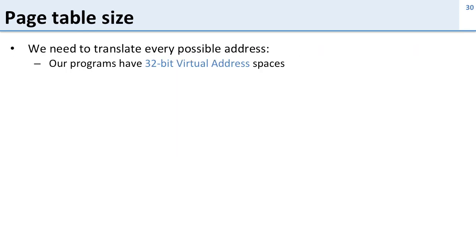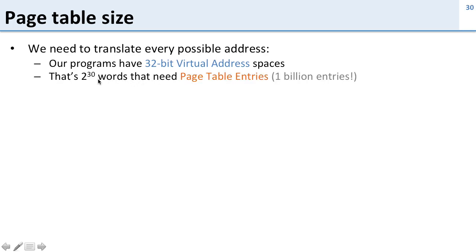Let's talk about page table size. We need to translate every address. Our programs have a 32-bit virtual address space, and we have to be able to access everything in it, or the programs can't use all their address space. So that's 2 to the 30 words that need page table entries. If we have one entry for every word, it's a billion entries — that's way too many entries.